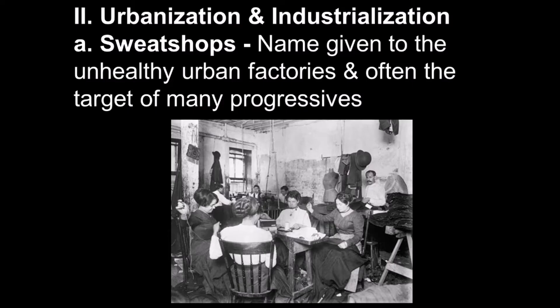Immigrants came over because there was work — industrial work. Most immigrants came in unskilled and had to do factory work. The first examples of sweatshops pop up during this time period, where people worked in terrible conditions: no AC, windows too small, machines powered by coal making the air dirty. These sweatshops became targets of progressive movements that developed during this time.